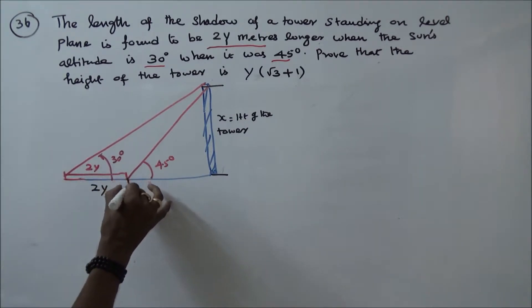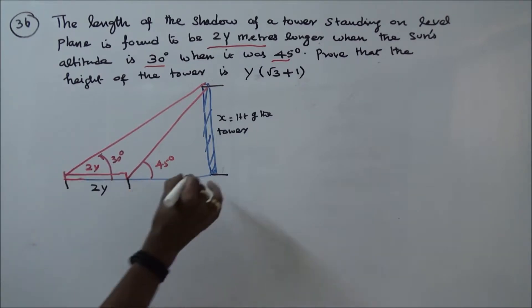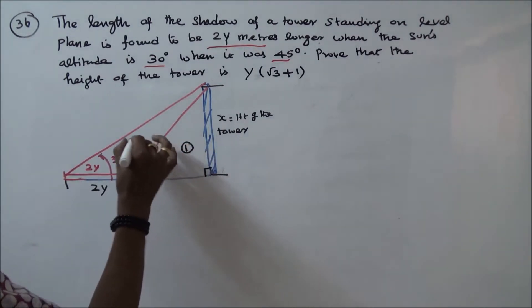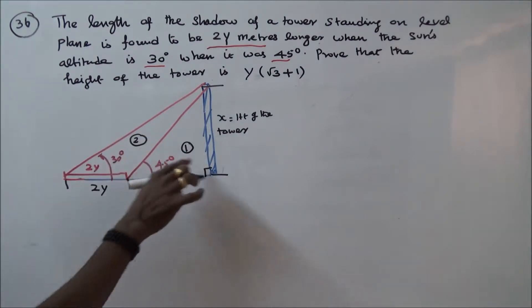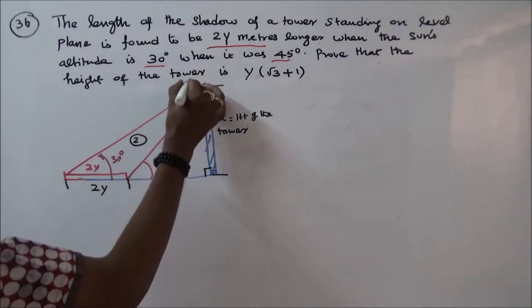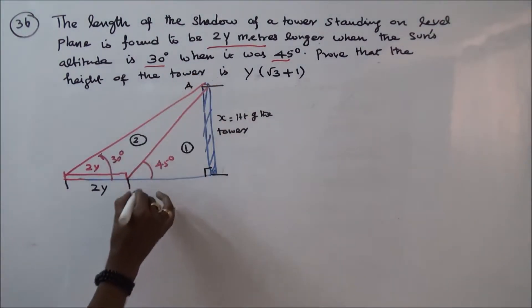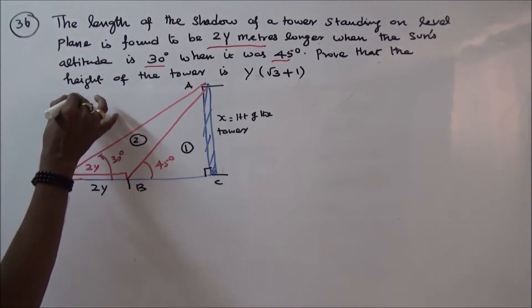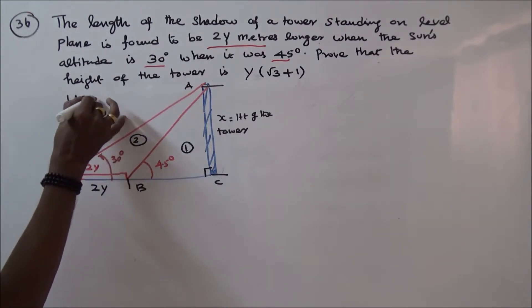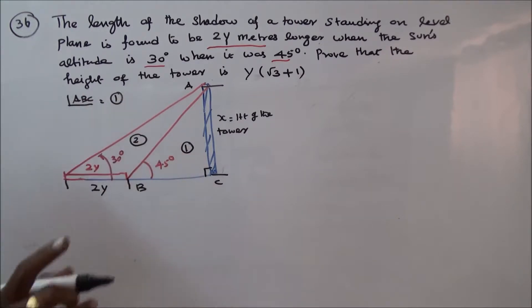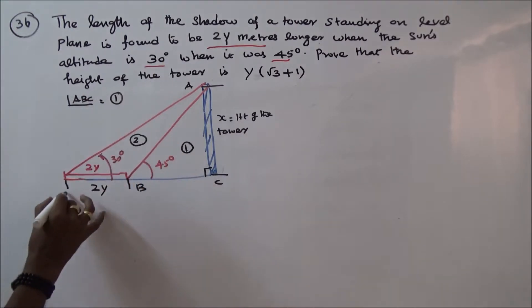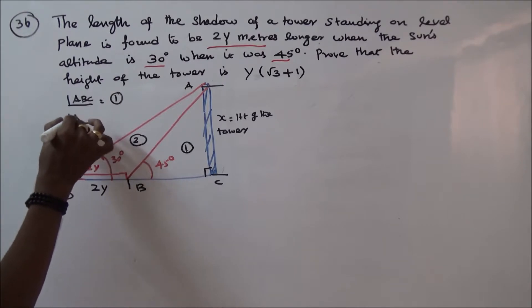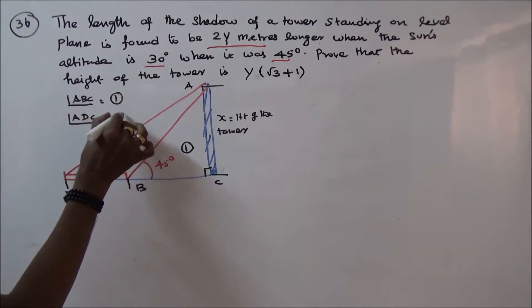Here there are two right angle triangles. The first triangle is ABC, and the second triangle is ADC.